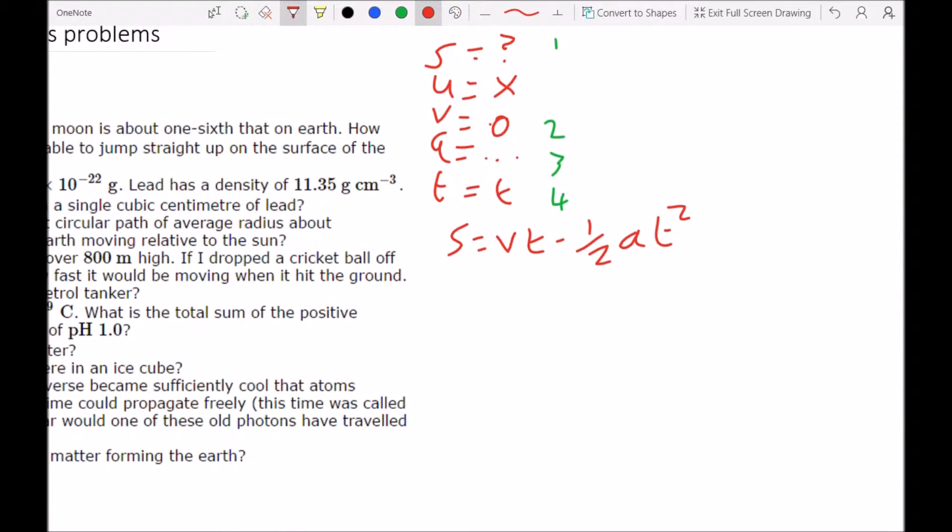And we know that v is zero, so that leaves us with s equals minus half a t squared. And what we want to do is define a positive direction, so if someone's on the surface of the Moon and they're jumping up, then we define this to be the positive direction. So the gravity of anything, whether it's on the Earth or the Moon, will be acting down. So if s is going up, then acceleration is going down.